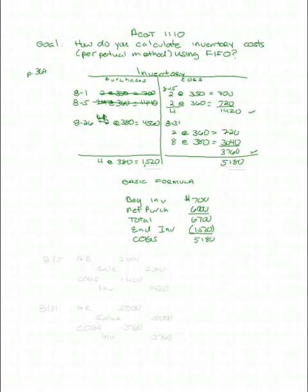Now, let's do our journal entries on 8/15. Remember, we had accounts receivable and a sale of 4 units at $500 each. And our cost of goods sold from that sale was $1,420 using FIFO. Cost of goods sold, $1,420. Inventory, $1,420.